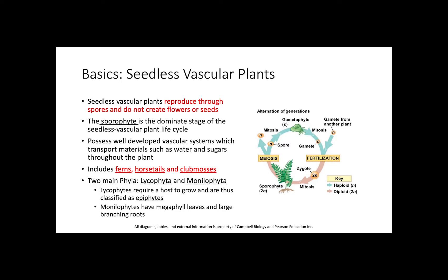Seedless vascular plants fall between two phyla: Lycophyta and Monilophyta. Lycophytes require a host to grow and are classified as epiphytes, meaning they cannot grow on their own — you won't see a lycophyte growing on the ground. Monilophytes, on the other hand, have megaphyll leaves and large branching roots, and they are not epiphytes, so you can see a monilophyte growing on the ground.